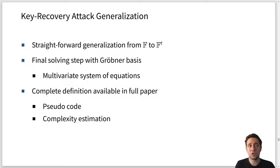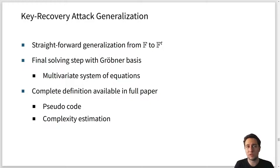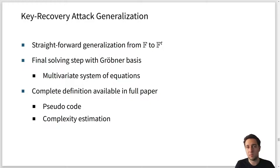Finally, we also give a generalization of the attack from the univariate description to the multivariate one. In that case we need a Gröbner basis step in the last step, because we have a multivariate system of equations. A complete description of this approach, including code and a complexity estimation, is available in the full paper. This may be applicable to other constructions that also have a low degree and are similar to MiMC.